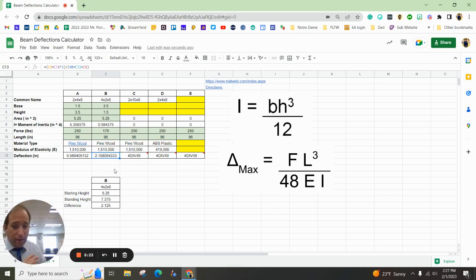Just to prove, a student that was 170 pounds, the starting height of the ruler was 5.25. And then when they stood on it, it bent down to 7.375. And we got a difference of 2.125, which is really darn close to this deflection. So this is math happening in action. And it makes it a little bit more fun.